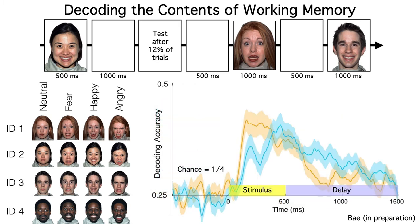As a result, decoding accuracy was well above chance for both identity and expression. Moreover, the decoding was done separately at each time point so that Giel could determine what information was present in the signal at each moment in time, first during the stimulus and then during the delay period.